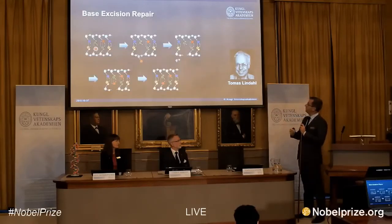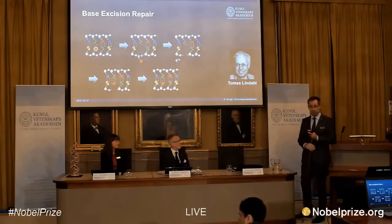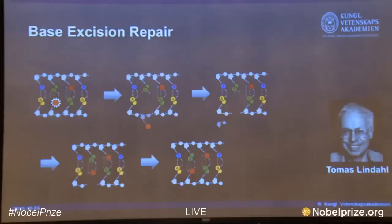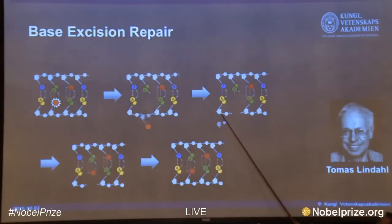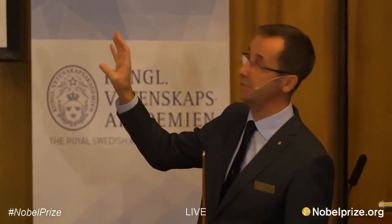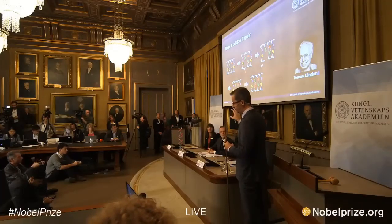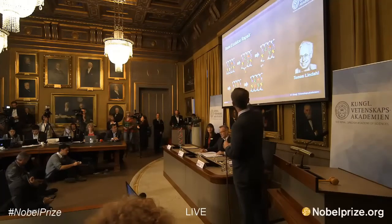Thomas speculated that there must be a repair system, and he went out to search for it. He could indeed find one, which is a repair system that we now know as base excision repair. This system can recognize the U in the DNA, flip it out, take it away, and then via a number of other reactions, replace the U with the correct C again. We know today that there are more than hundreds of different lesions to DNA that can be repaired by the base excision repair system, and it guards the information in our genomes.